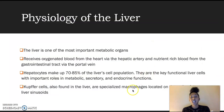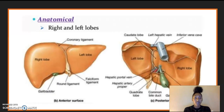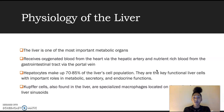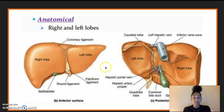Regarding the physiology of the liver: the liver is one of the most important metabolic organs. It receives oxygenated blood from the heart via the hepatic artery — going back to that previous slide, the hepatic artery here provides that oxygenated blood. And then it receives nutrition-rich blood from the gastrointestinal tract via the portal vein, which is also shown on the previous slide.